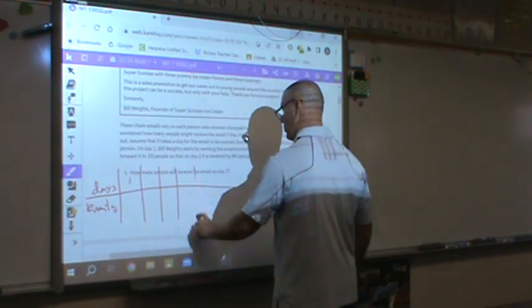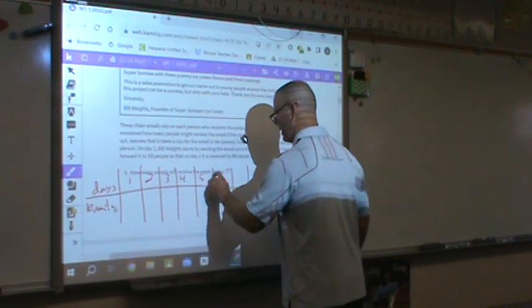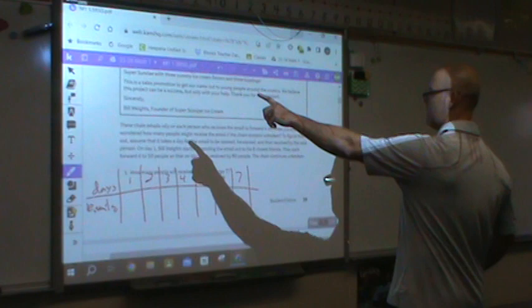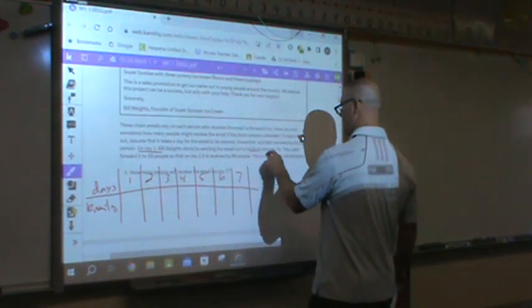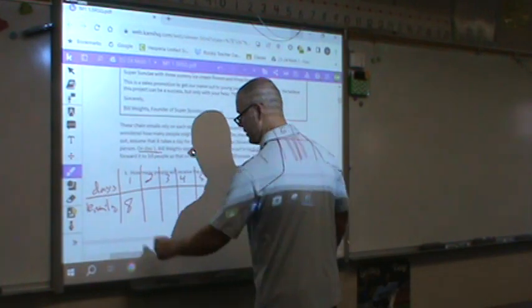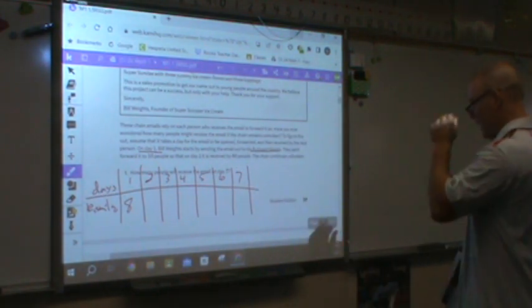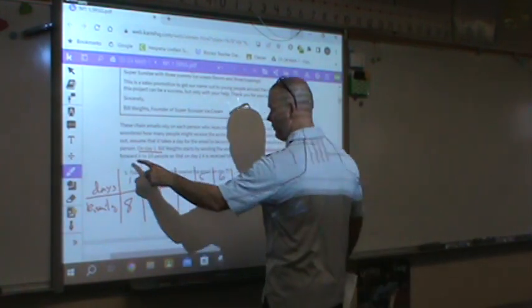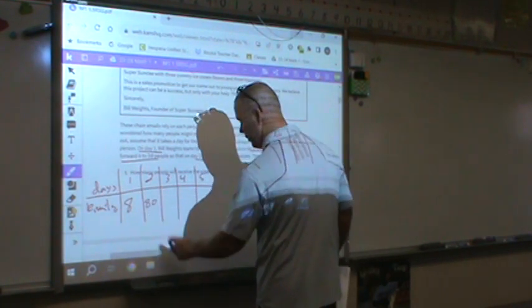So on day one, how many people are going to get an email? Two, three, four, five, six, and seven. Well, we've got to go back and we've got to look. If you go back and underline the important stuff, on day one he sends it to eight of his closest friends. If he sends it to eight of his friends, then each forward it to 10 people so that on day two it's received by 80 people.